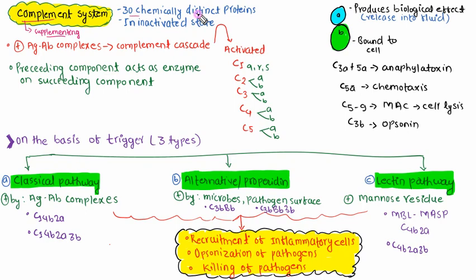The complement system consists of nearly 30 chemically distinct proteins present in an inactivated state. These are about five percent of serum proteins located in an inactivated state. Classically, these are activated or stimulated by antigen-antibody complexes, which will start or initiate the complement cascade, leading to activation of these proteins.